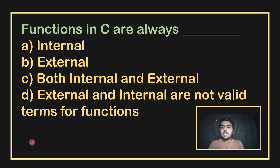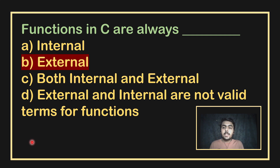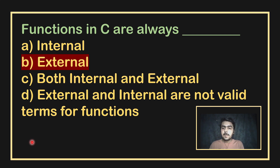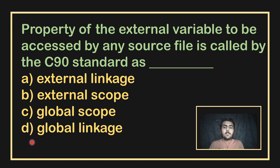Functions are always external — is this true or false? A function is internal within its own file but because it is visible across other files in the program, it is considered external. This is like a global variable that is visible across the whole program. By the C90 standard, this is called external linkage.